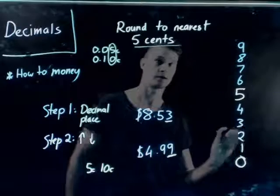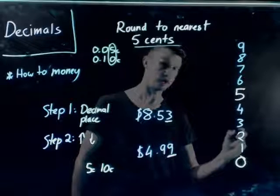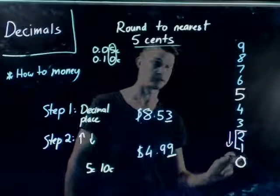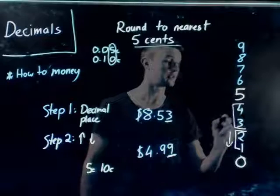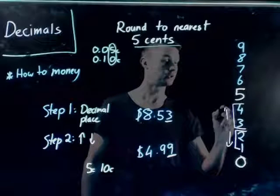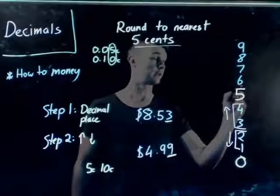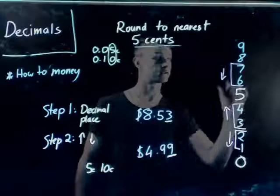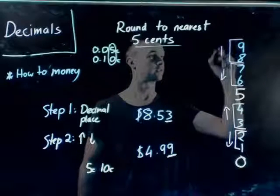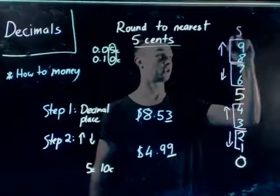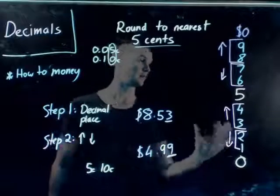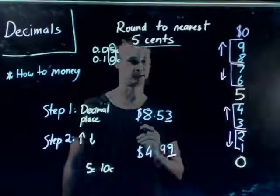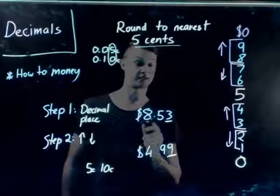It's pretty much split down the middle. If the number ends in one or two cents, it rounds down to zero cents. If it ends in three or four cents, it rounds up to five cents. On the other side, if it ends in six or seven cents, it rounds down to five cents. If it ends in eight or nine cents, it rounds up to the nearest dollar — which means the cents become zero.